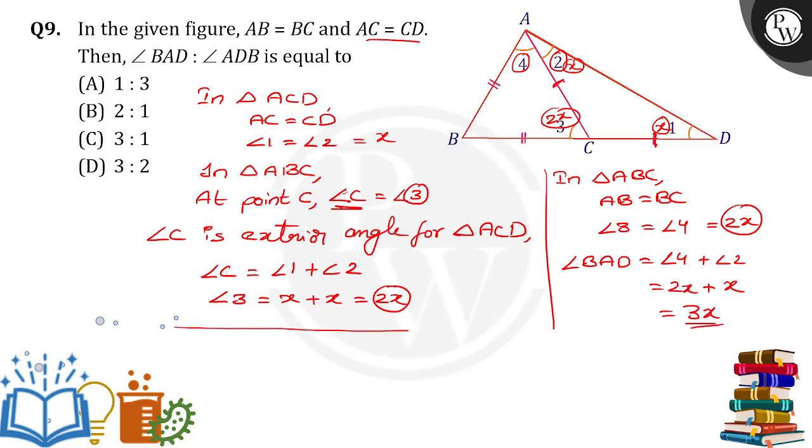Now we need to form the ratio angle BAD by angle ADB. BAD we got as 3X, and ADB we take as X. So X and X cancel, we get 3 by 1. That is nothing but the ratio 3 to 1. C is the right answer. Thank you.